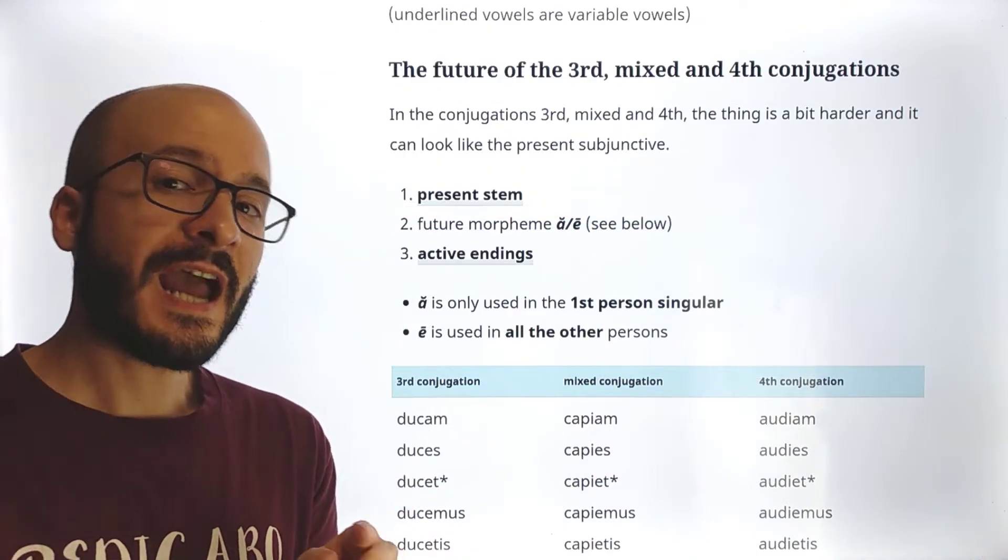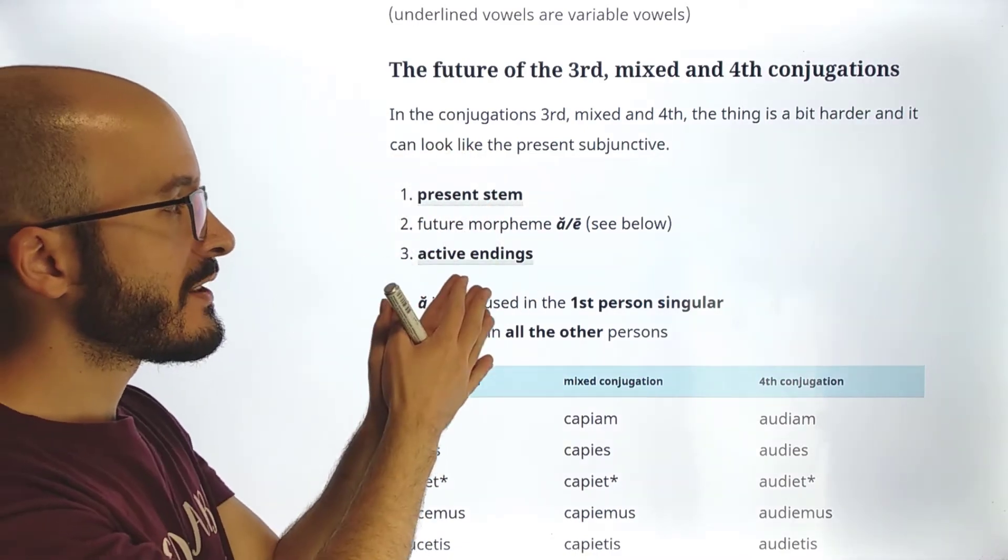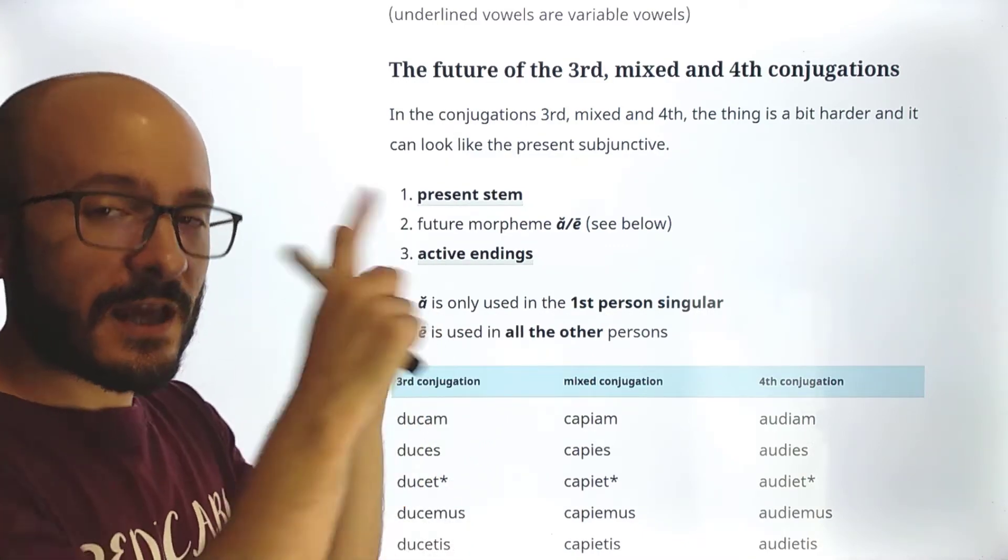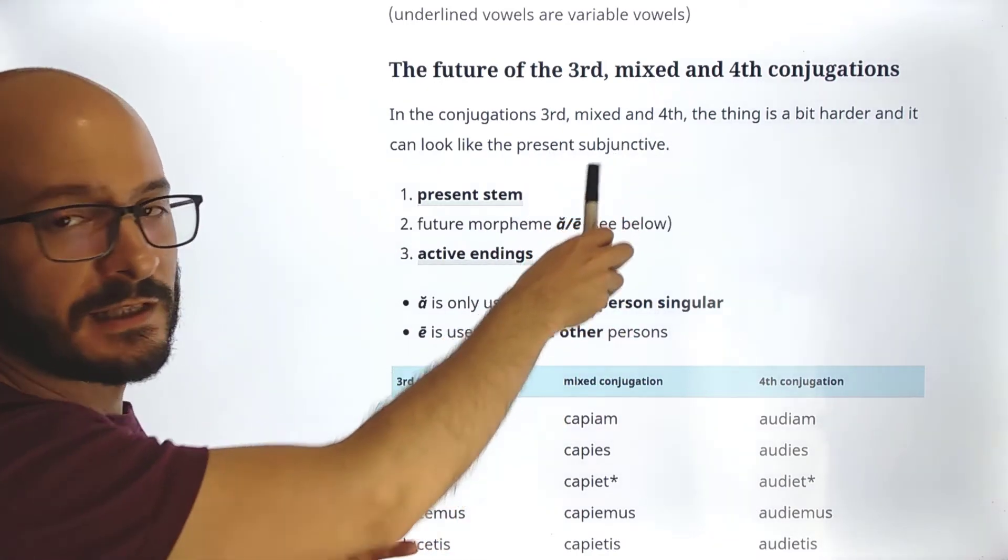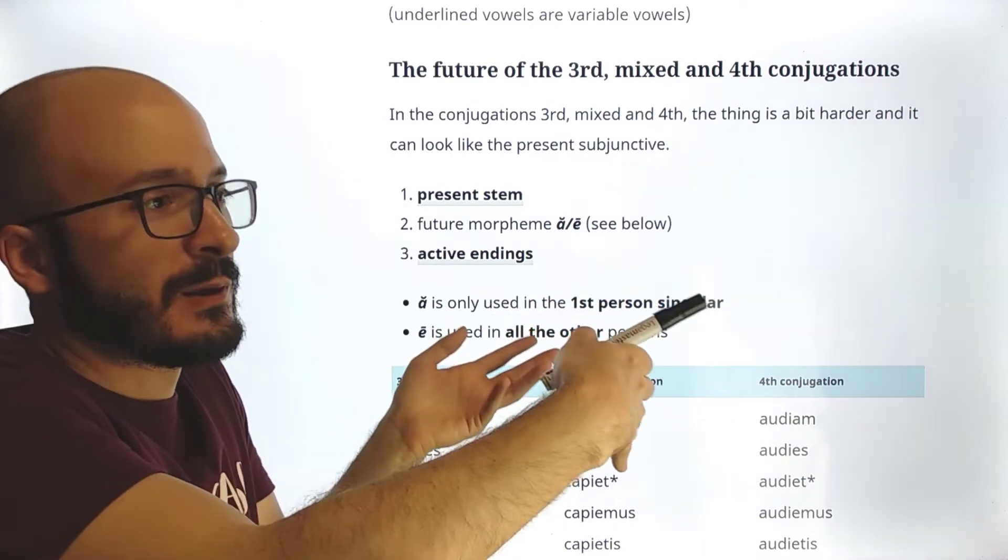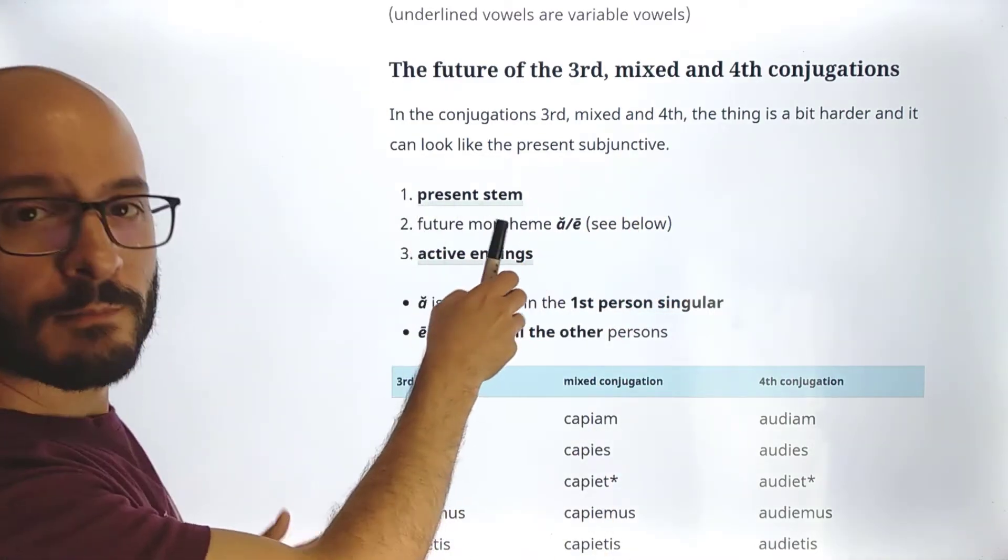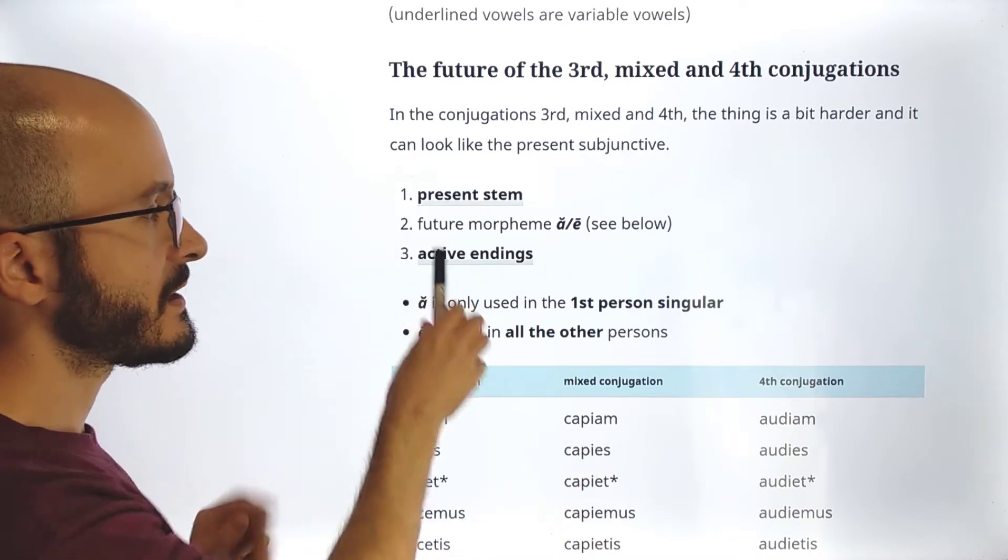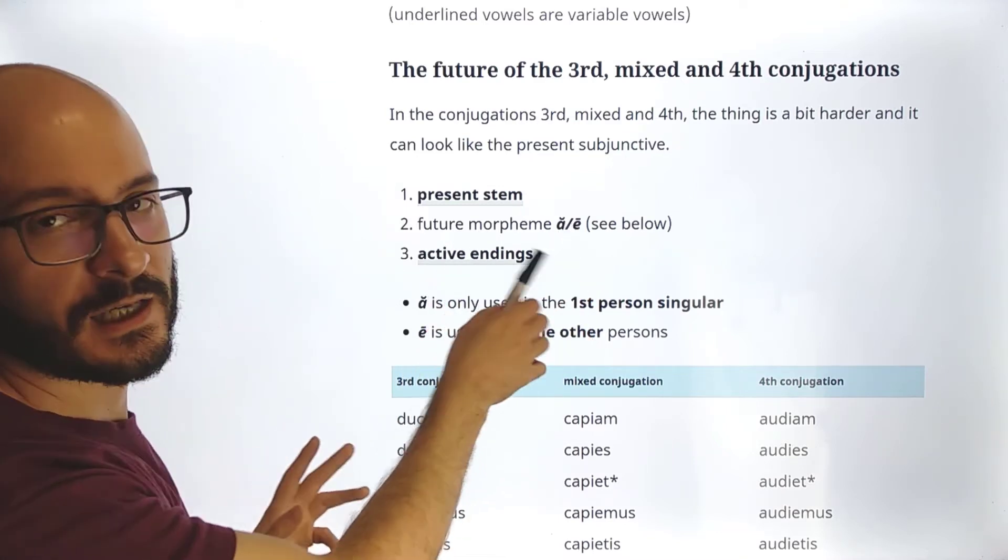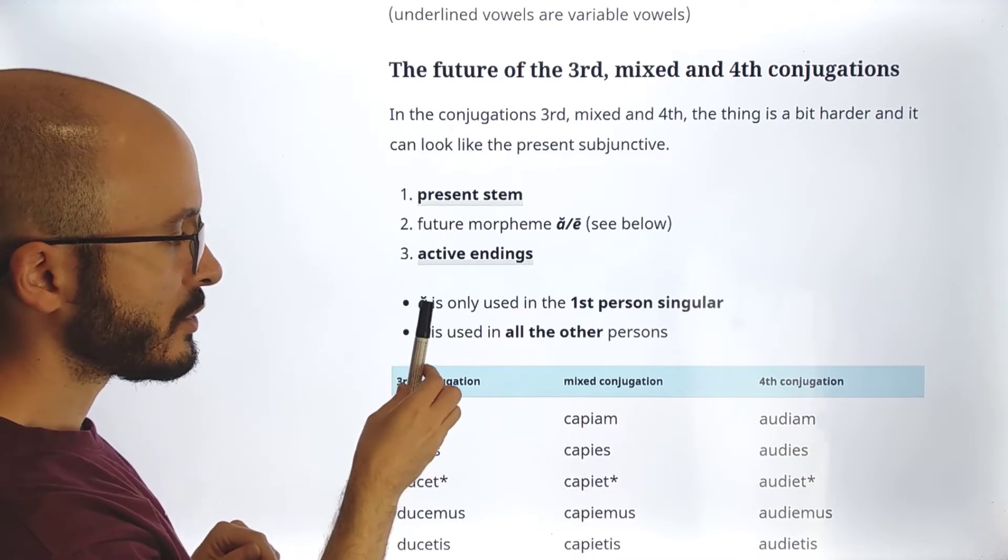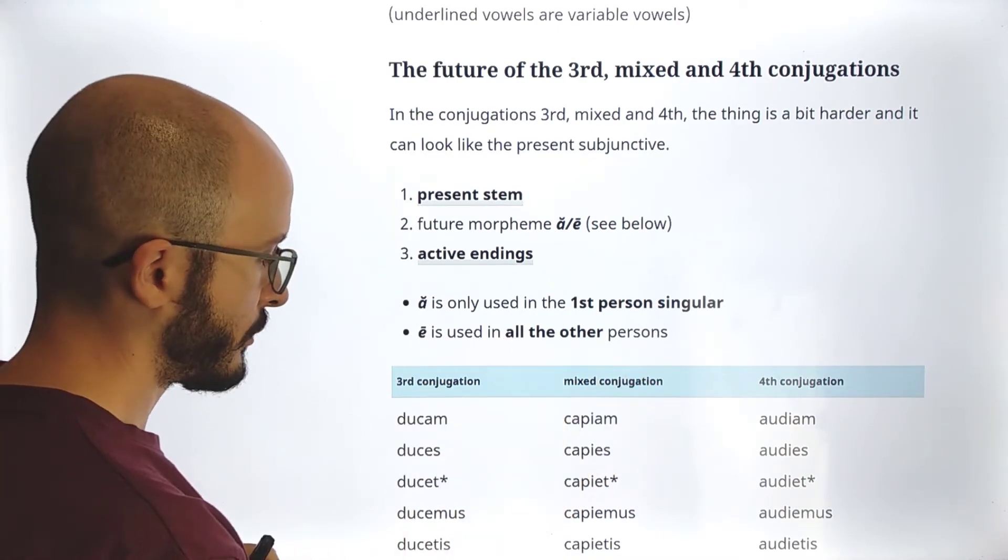Now we have to study the other type of future, the future of the third mixed and fourth conjugations. We are going to see that it doesn't have anything to do with the other type, the first type that we have already learned. The thing is a bit harder, and it can look like the present subjunctive. For now, we don't know the present subjunctive, so you don't really have to worry. You will have to worry once we learn the present subjunctive. But for now, present stem, this doesn't change. Now what does change is this future morpheme A, like short A, or long E, and then the active endings as usual. So we use short A only in the first person singular, and long E in all the other persons.